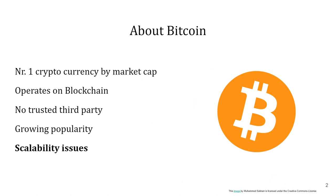The blockchain technology which underlies some of the most well-known cryptocurrencies such as Bitcoin and Ethereum enables mistrusting entities to cooperate without involving a trusted third party such as a bank.